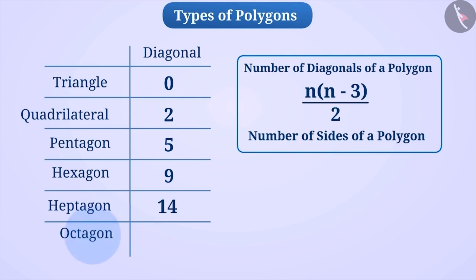Tell me, what will be the number of diagonals in an octagon? Pause the video and try. You got the right answer. It will be 20.